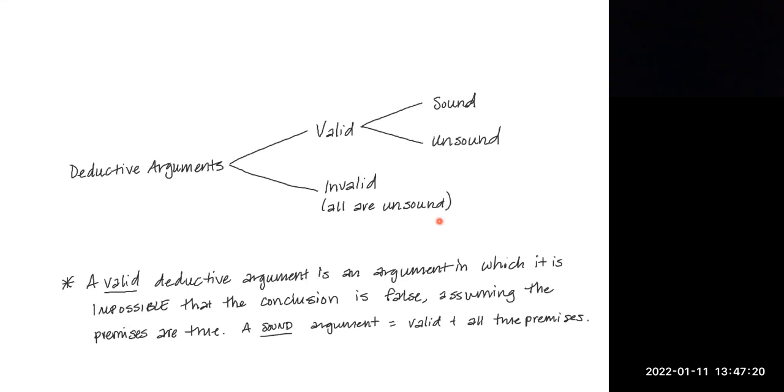Let's take a look at an example. If we test an argument for validity that we already know is deductive, we want to assume all the premises are true, and then determine if it's possible that the conclusion is false. For example: all television networks are media companies; NBC is a television network; therefore, NBC is a media company.